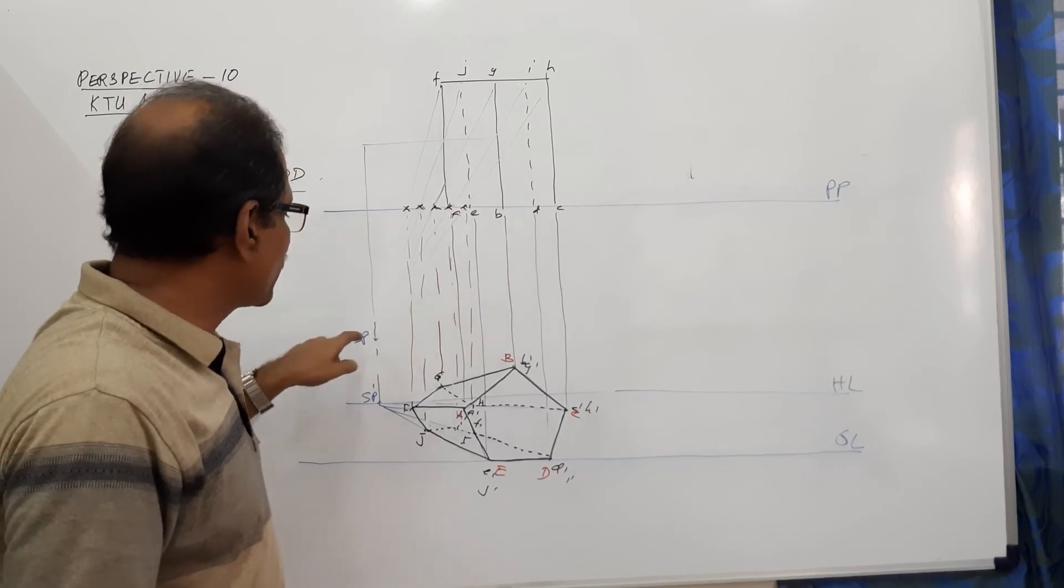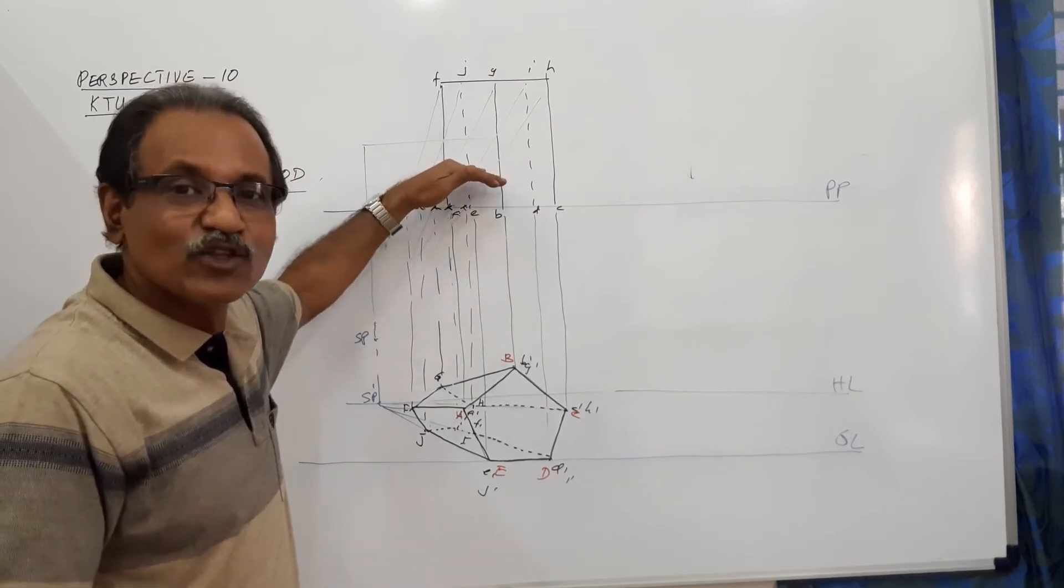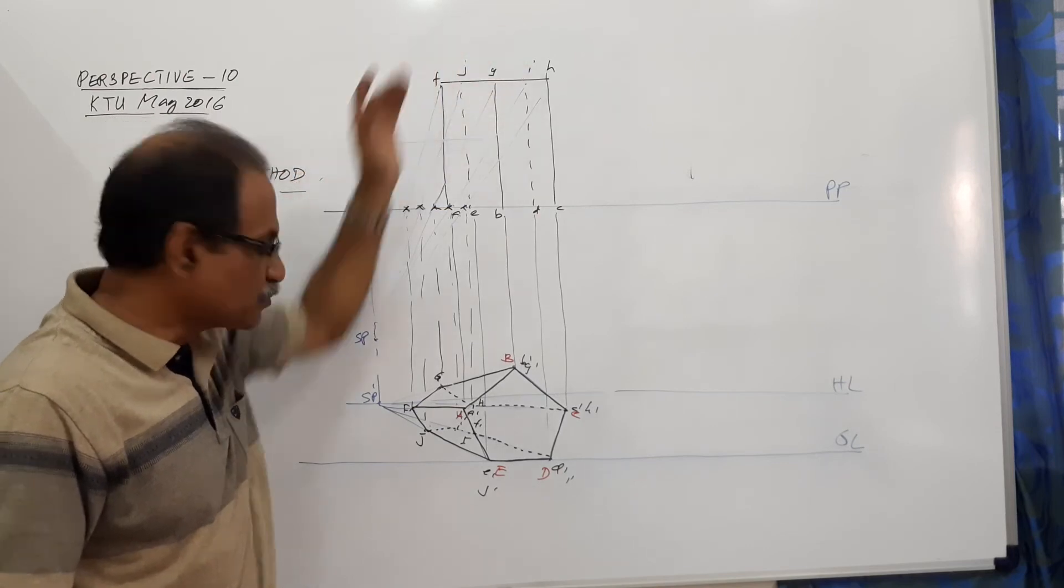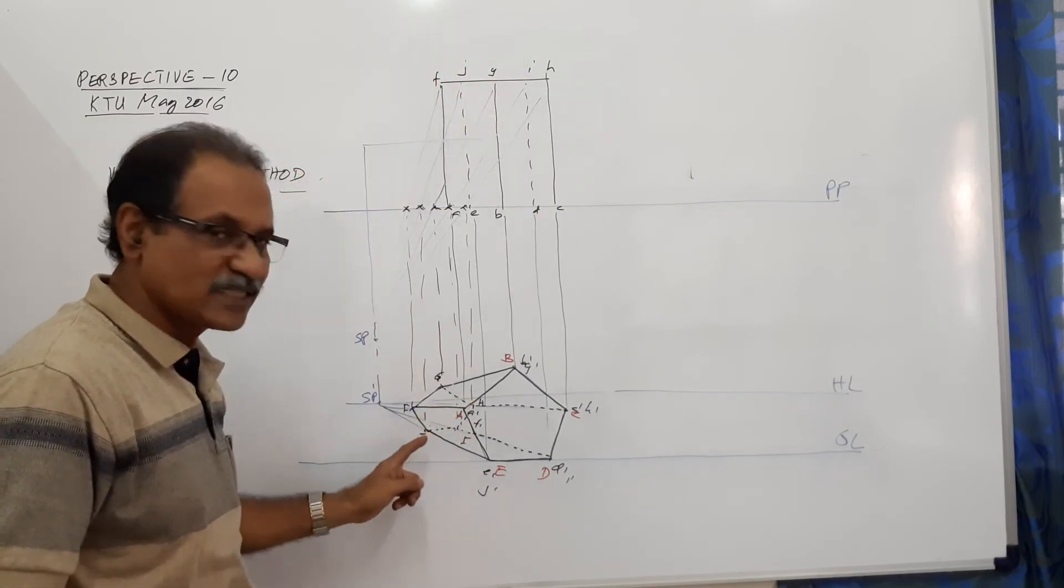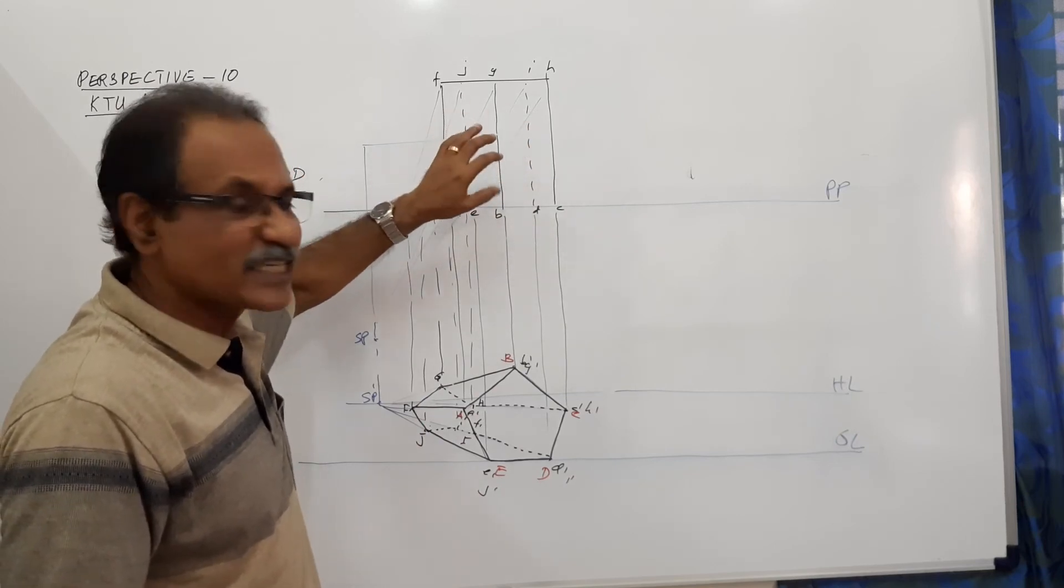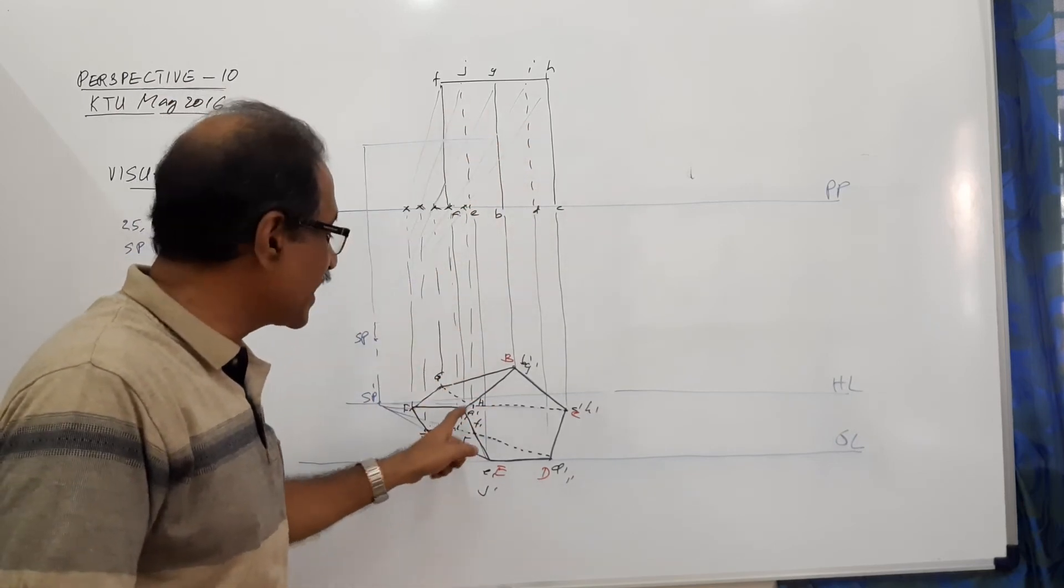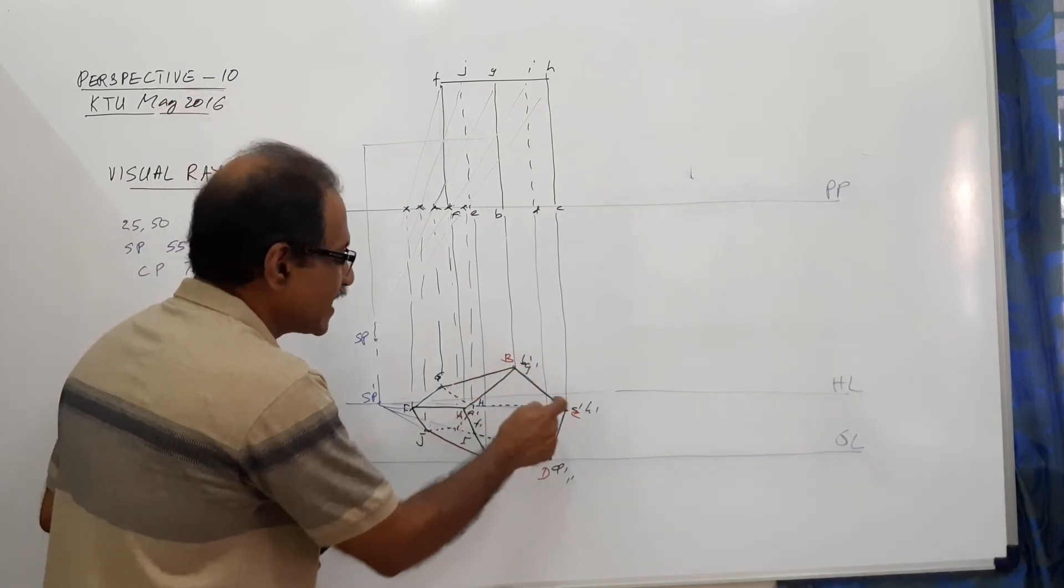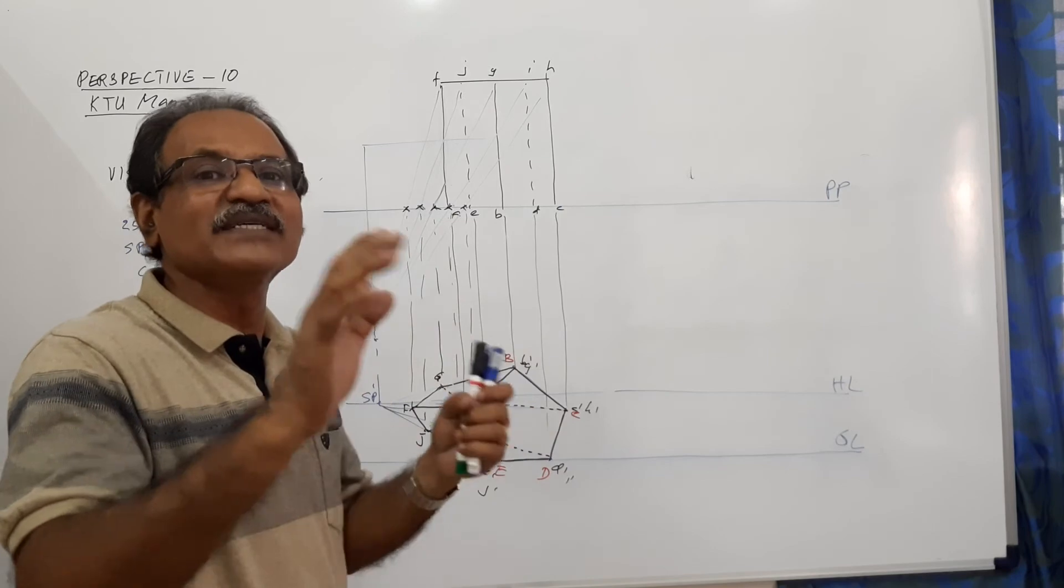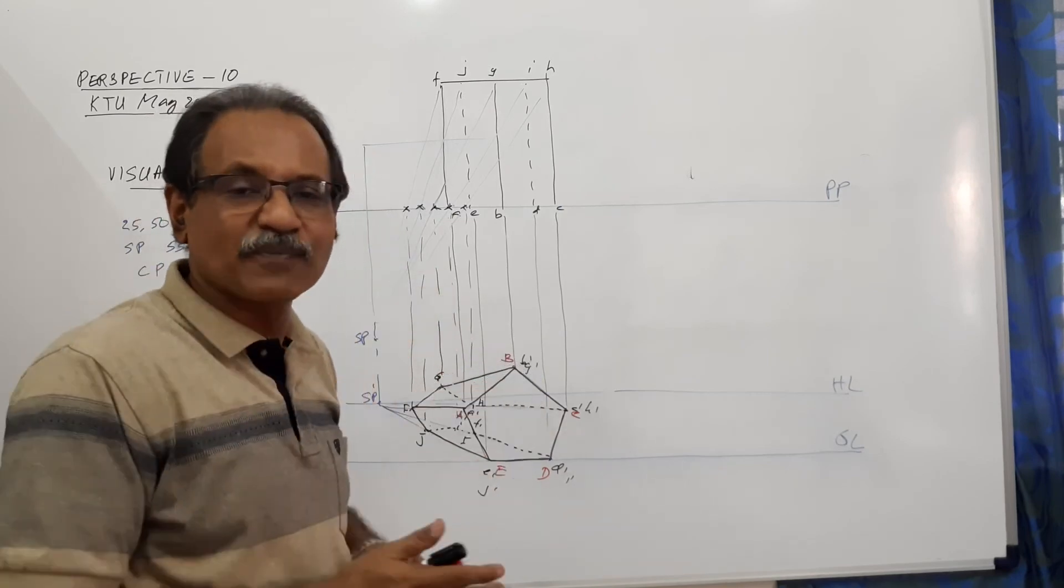So, when you join those points to SP, you will get intercepts. Those intercepts will have to be dropped. Just like the way you have dropped intercepts from these points to get these points, the front interface, which is behind PP, will have intercepts. Those will have to be dropped to get capital A, B, C, D, E. And that will remain just behind, which is a slightly smaller pentagon.